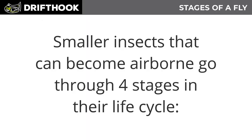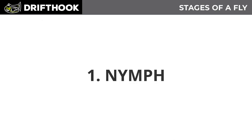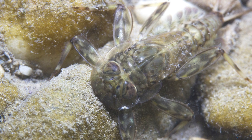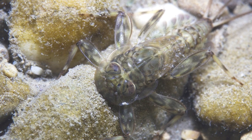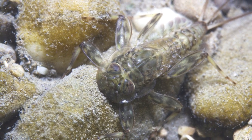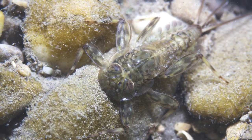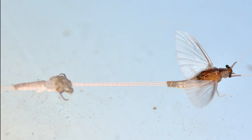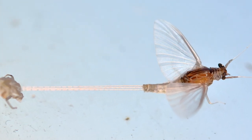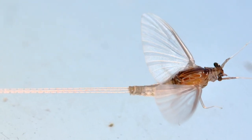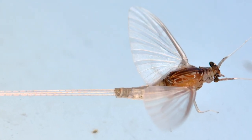Smaller insects that can become airborne go through four stages in their life cycle. The nymph cycle — this is when they first come out of their eggs and they're still growing. Typically, they'll cling to the bottom of a river until the current sweeps them away from their home. Number two is the emerger. This is when they start to come out of the water; they're getting ready to fly and go off and do their mating cycle.